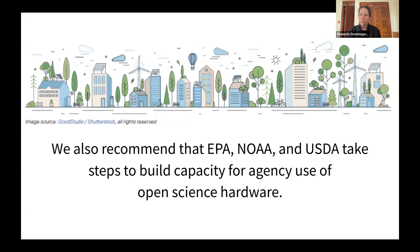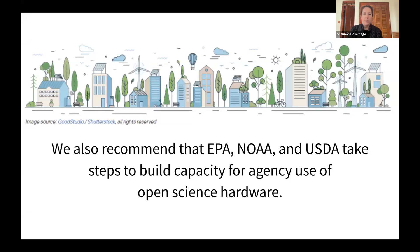Overall, our argument is that defaulting to open science hardware for agency science will result in an open library of tools that are replicable, customizable, and result in a much higher return on investment for federal agencies. Beyond that, prioritizing open science hardware in agency science allows all kinds of institutions, organizations, communities, and individuals to contribute in meaningful ways to agency science goals, building upon different collaborative efforts of everyone. I look forward to hearing from Michael and Alicia on their topics.